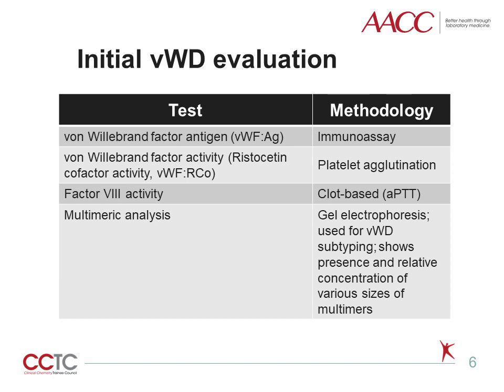This should include measuring von Willebrand factor antigen performed by immunoassay, von Willebrand factor activity, and factor VIII activity. Because von Willebrand factor has several functions, there are several different types of activity functional tests. One of the more common methods is known as ristocetin cofactor activity. Von Willebrand factor multimeric analysis is an electrophoresis test that allows visualization of the size distribution of von Willebrand factor multimers in patient plasma. It is used for subtyping of von Willebrand disease, since certain type II subtypes are associated with multimeric abnormalities due to missing high or high-and-intermediate molecular weight multimers.